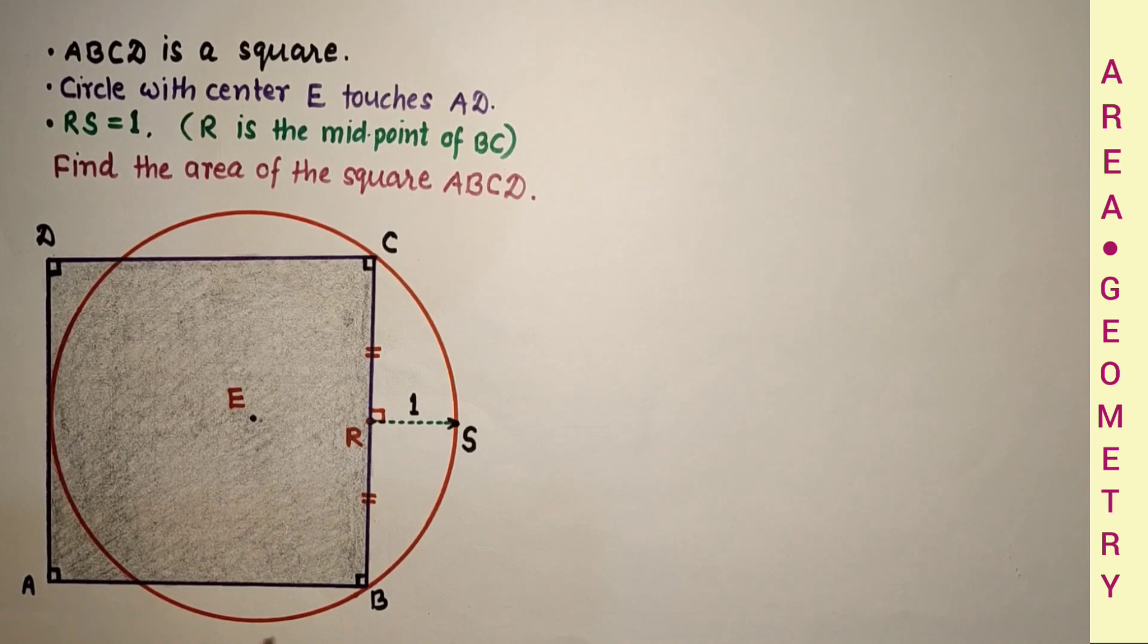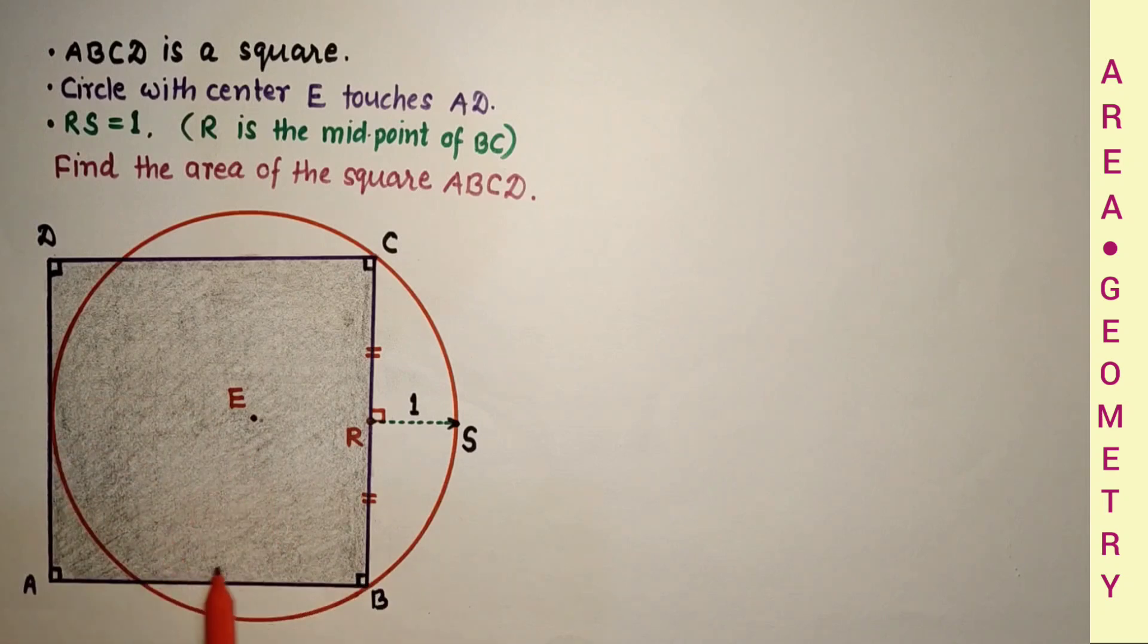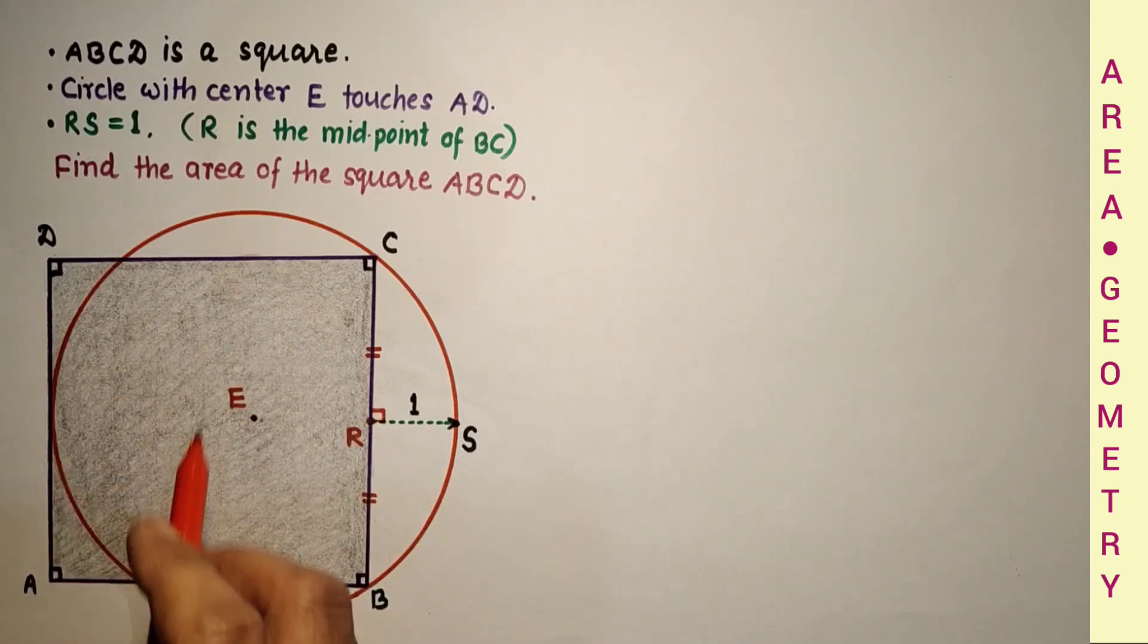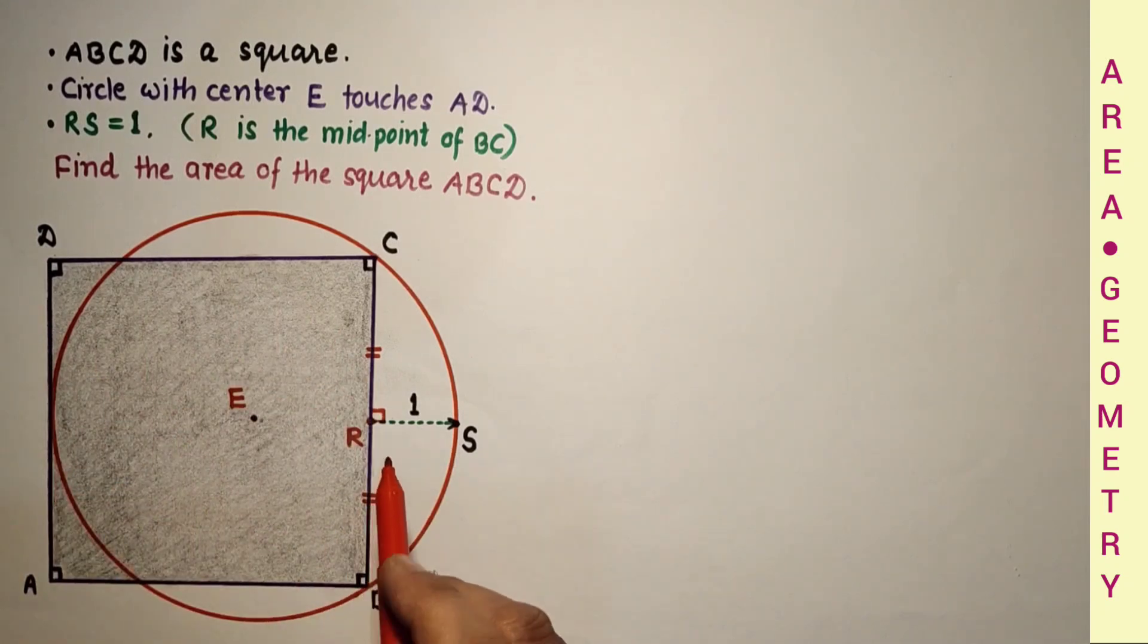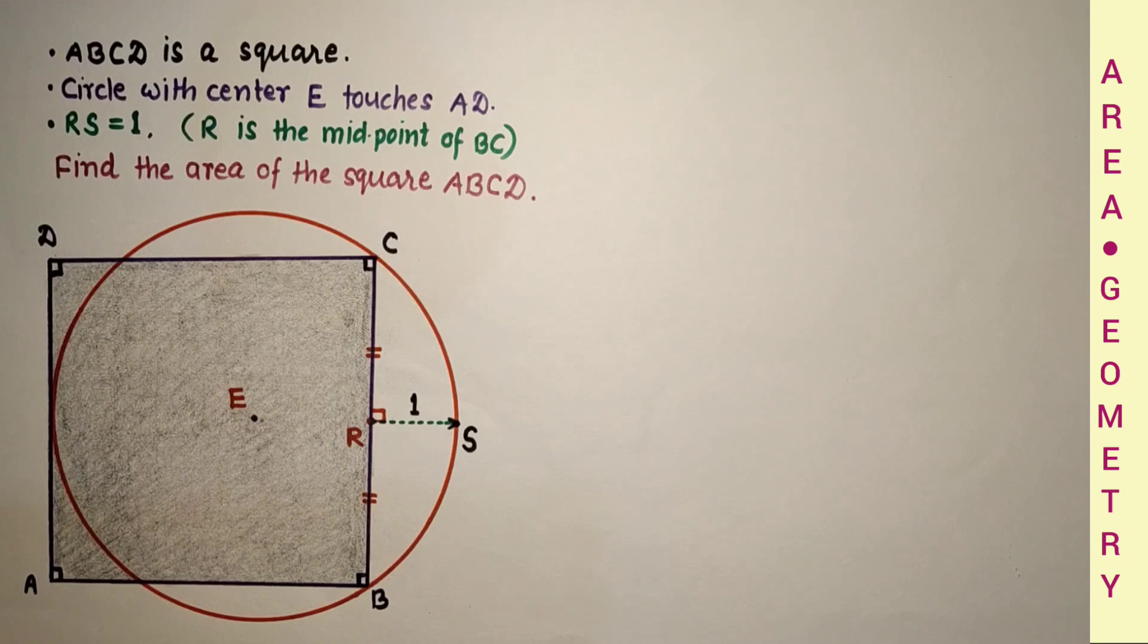In this question ABCD is a square given, and it is a circle with center E which touches the side AD of the square. We are given that the distance RS is 1, where R is the midpoint of side CB. We have to find the area of this square.